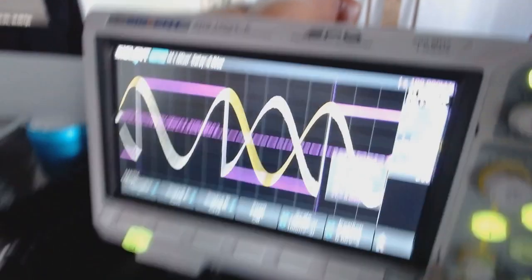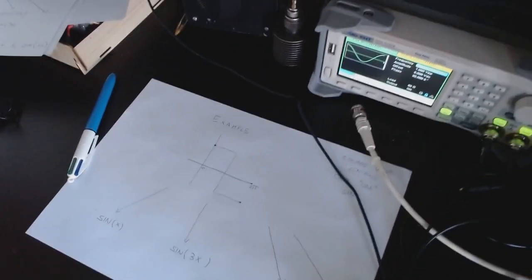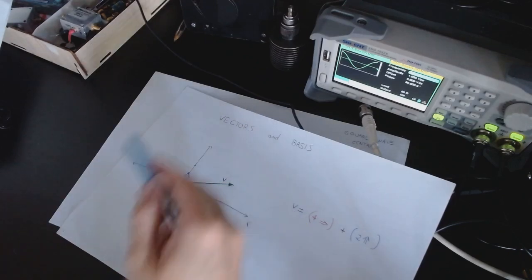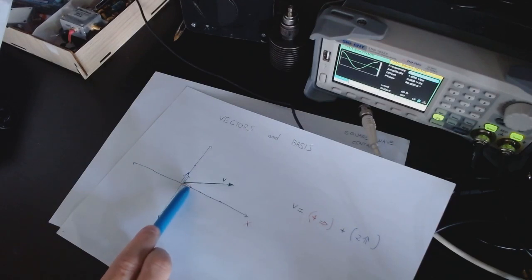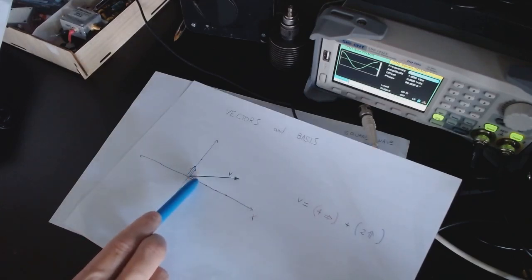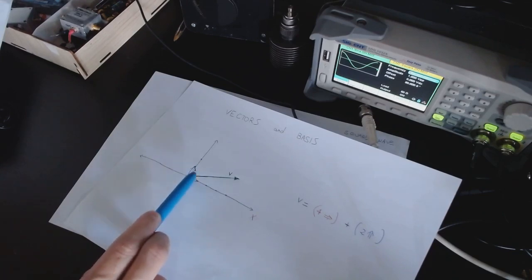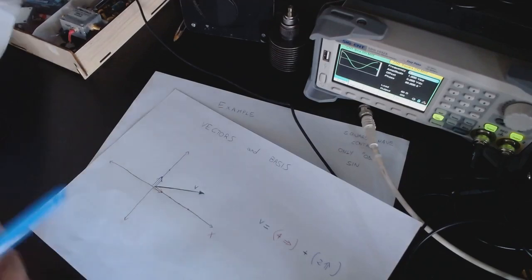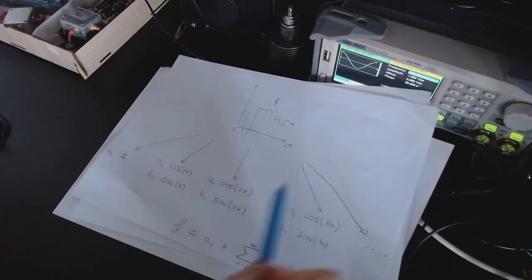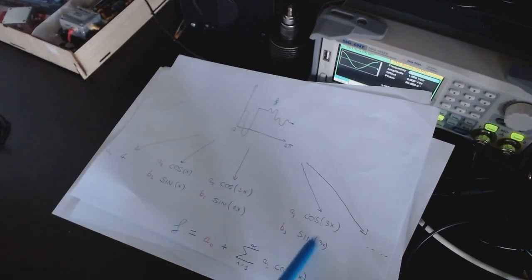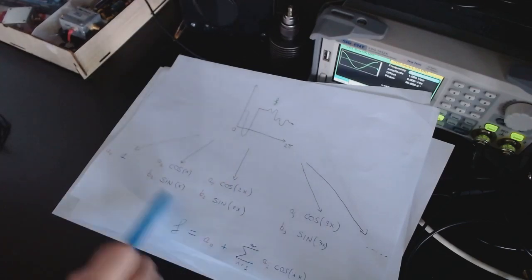Something pretty interesting: going back to our intuition about vectors and basis in the Cartesian plane — these basis vectors are orthogonal. This means the vertical component of the horizontal unit vector is zero, and vice versa. Blue has zero energy in red and vice versa. This orthogonality is also true for the trigonometric basis in Fourier series: each harmonic has zero energy in any different harmonic — they are mutually orthogonal.